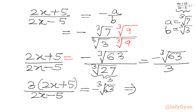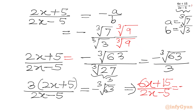Now we will multiply our equation by 3. So 3 times (2x + 5)/(2x - 5) = -cube root 63. The final answer: 3 times 2x is 6x, 3 times 5 is 15, and the denominator is 2x - 5. So our answer is (6x + 15)/(2x - 5) = -cube root 63. This is our final answer. I hope friends you will like this video. Thank you so very much for watching. Do not forget to like, share and subscribe. Bye-bye till next video. Good luck.